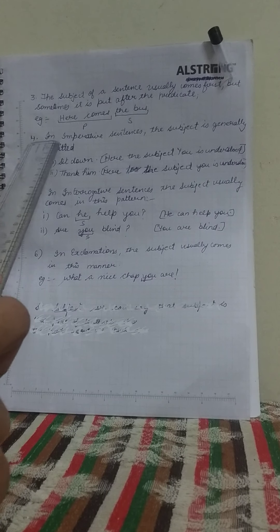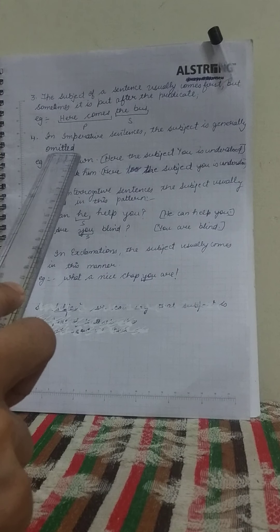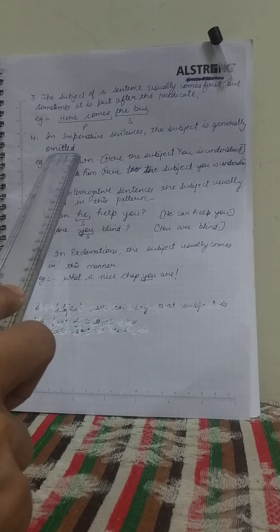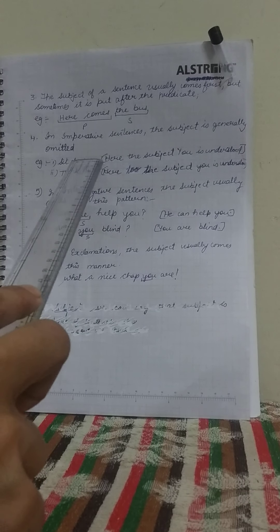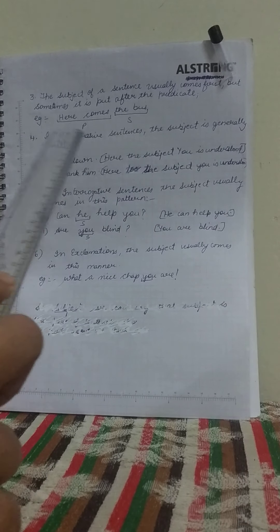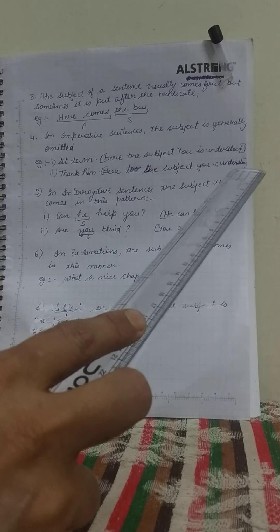Fourth point: in imperative sentences, the subject is generally omitted. In an imperative sentence, some order or command is given, and the subject is not stated because we know what it will be. For example, 'sit down' — here the subject 'you' is understood. Similarly, 'thank him' — here too the subject 'you' is understood.